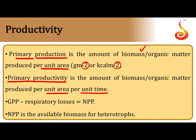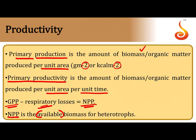The overall amount of organic matter produced per unit area per unit time is gross primary productivity (GPP). A plant does not store all of it — much is used in its own respiratory processes. When we subtract respiratory losses from GPP, the remaining organic matter available to the next trophic level is referred to as net primary productivity (NPP).